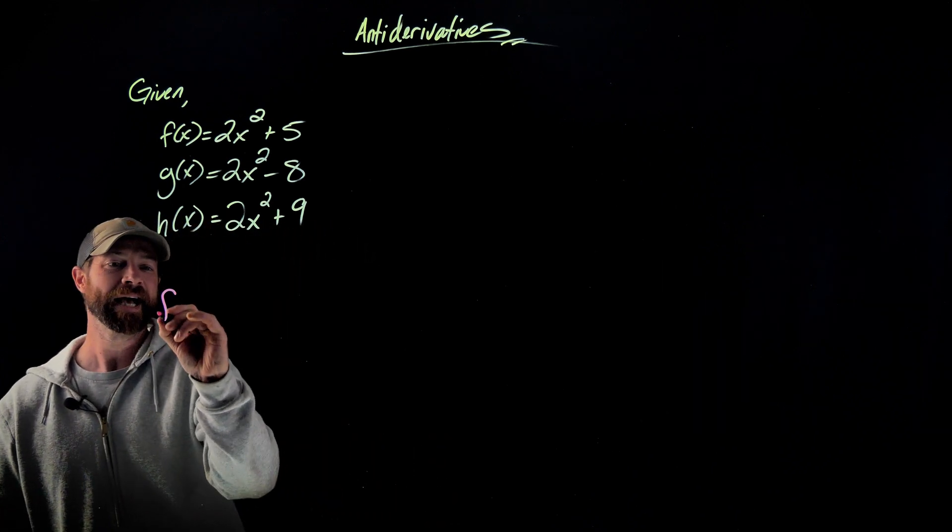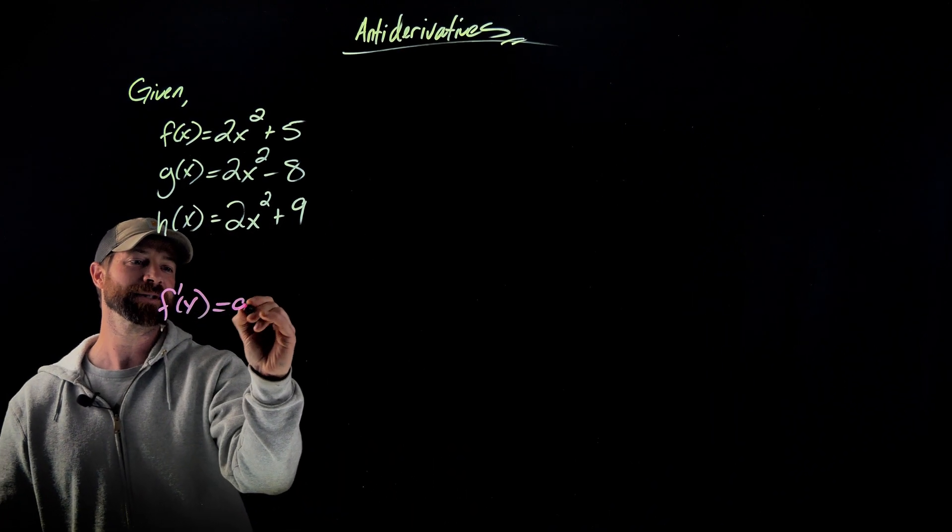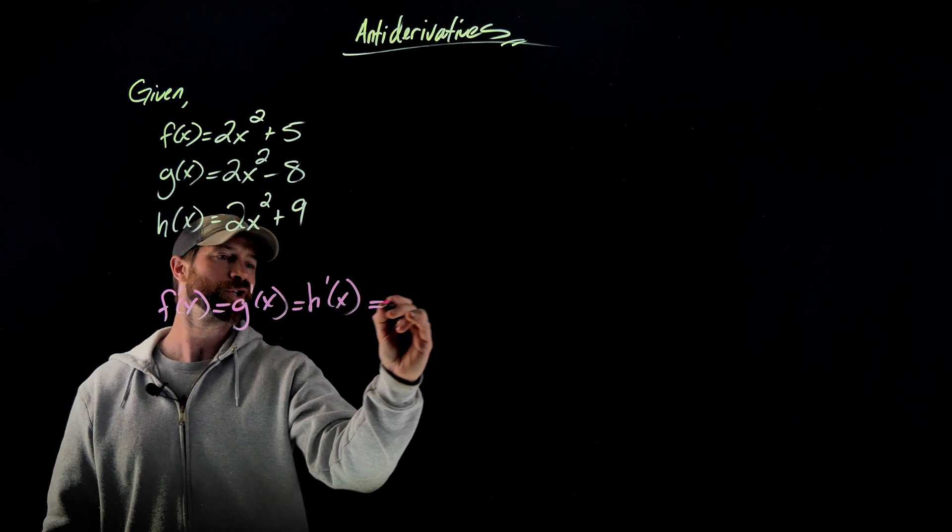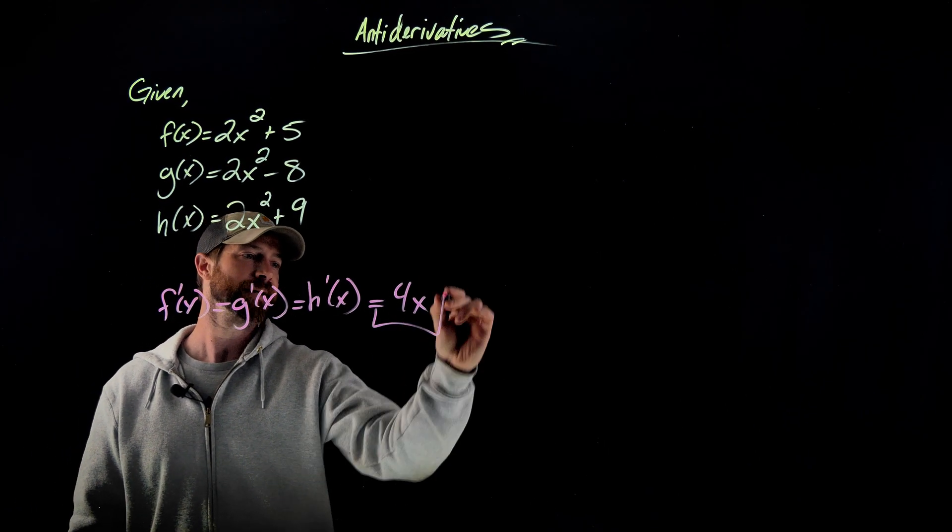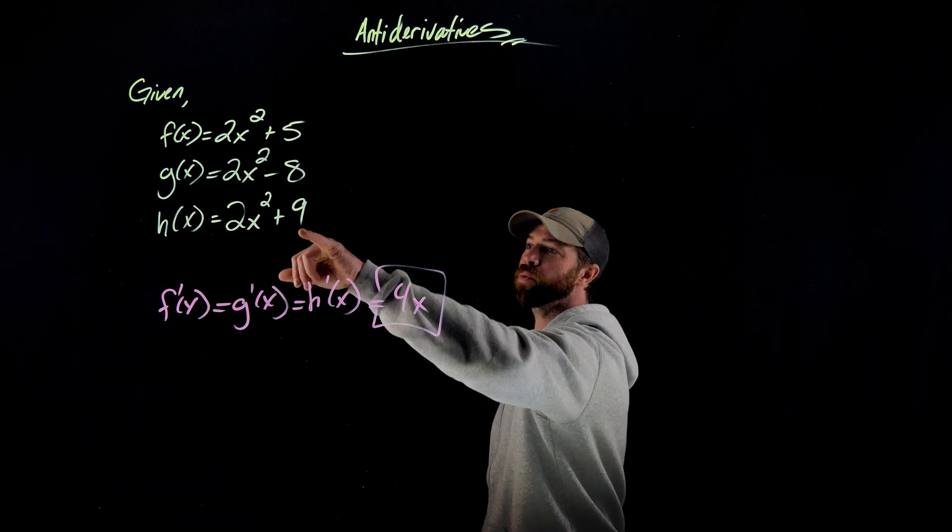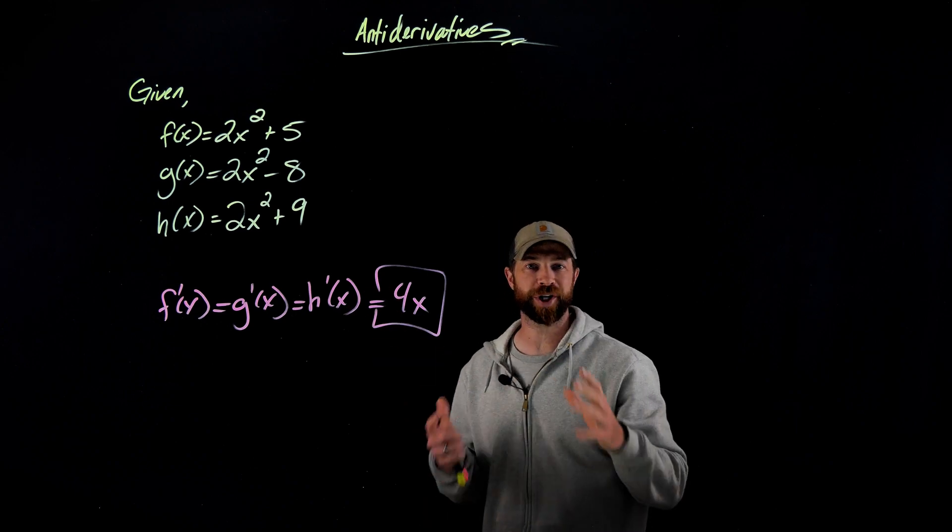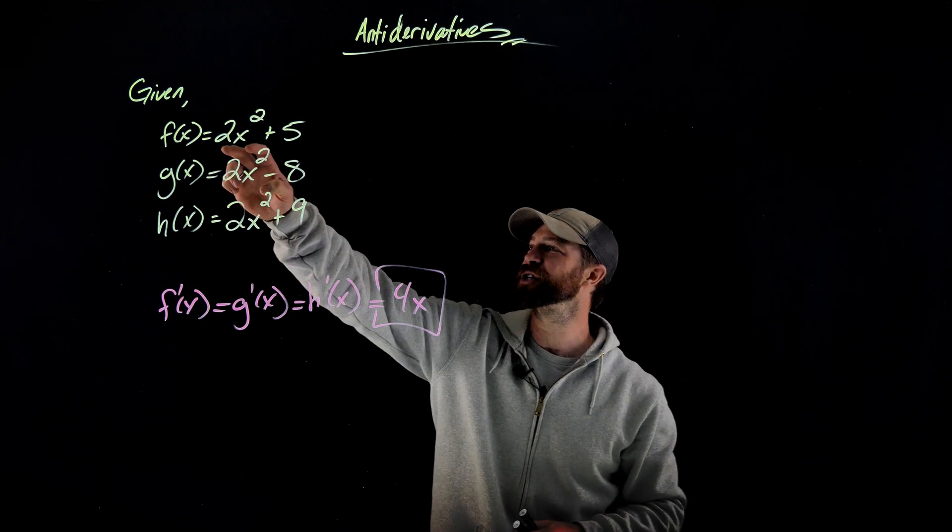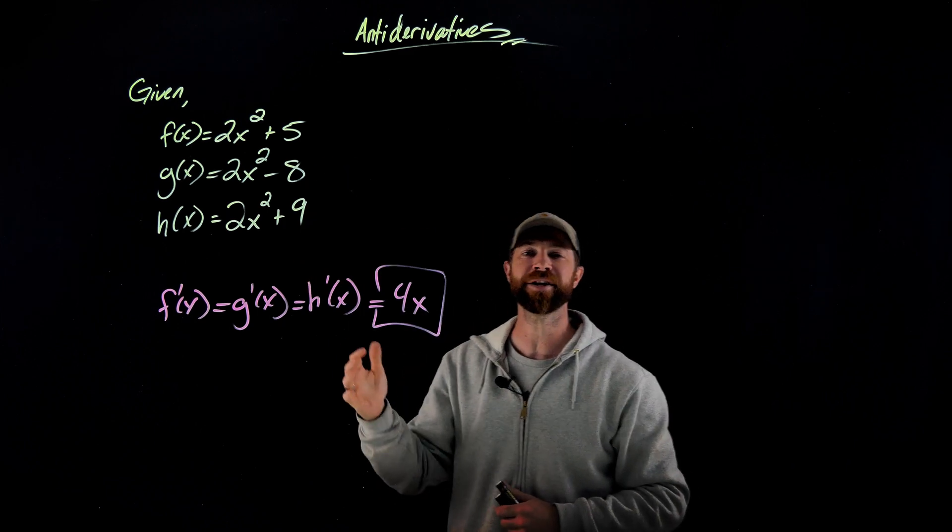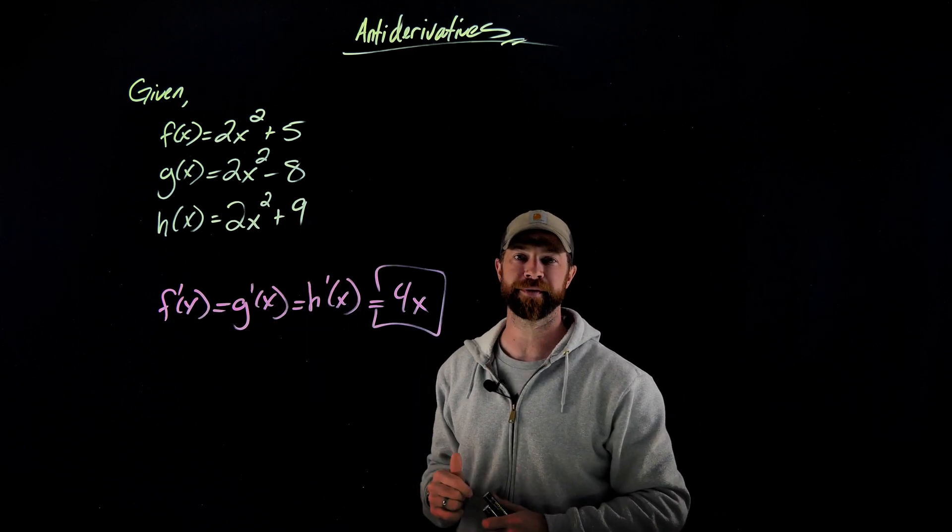Or specifically, f'(x) = g'(x) = h'(x), which all equal 4x. That's obviously not new news to us, but the important thing here is because when we differentiate, the constant terms go away, if we have functions that are identical except for the constant at the end here, they will all have the same derivative.